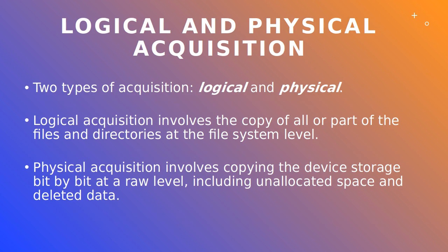There are basically two ways of acquiring data from a mobile device: logically and physically. Logical acquisition involves the copy of all or specific files and directories at the file system level, as we would do when making a backup. Physical acquisition involves copying the device storage bit by bit at a raw level, as we have already seen in the previous video when imaging the hard drive.